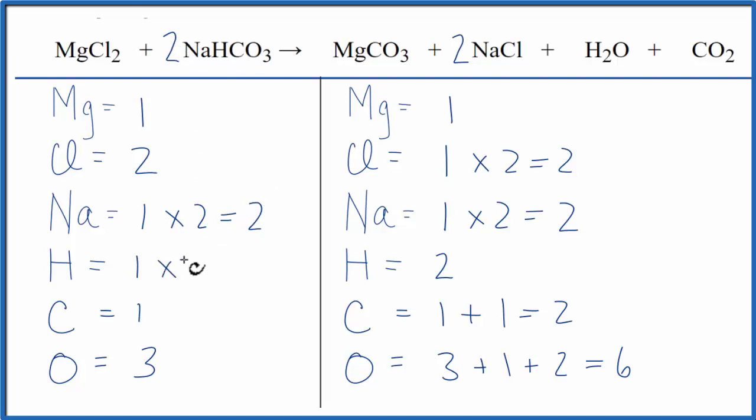1 times 2 for the hydrogen, that balances the hydrogens. For the carbon here, we have 1 times 2. That would give us 2 carbons. And then finally the oxygen is 3 times 2. That will give us 6 oxygens. And everything is the same on both sides of the equation. So this equation is balanced.